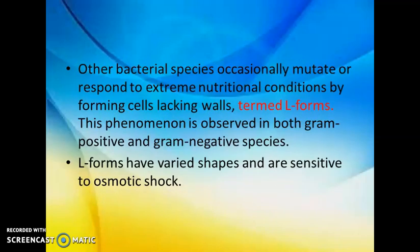Another type of cell wall-deficient bacteria are called L-forms. These can be formed as a result of mutation of normal bacteria, or when normal bacteria respond to extreme nutritional conditions, causing them to lose their cell wall. This phenomenon can be observed in both gram positive and gram negative species. L-forms have varied shapes because they lack cell walls, and they are sensitive to osmotic shock.